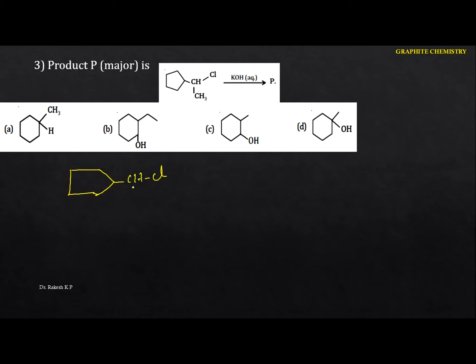Next: the major product P. This is a nucleophilic substitution (SN1) reaction. The halide Cl is given with CH3 group. In the first step of SN1, a carbocation is formed, giving +CH−CH3. Whenever there is a possibility of ring expansion, the stability of the carbocation increases. Numbering the ring carbons 1–6.